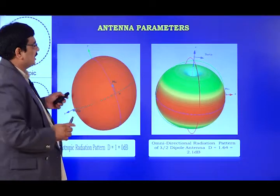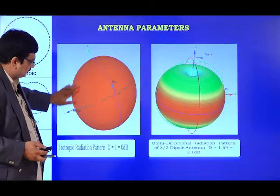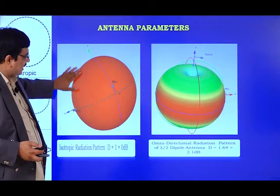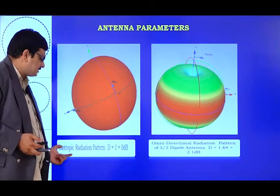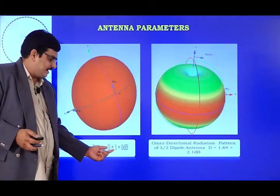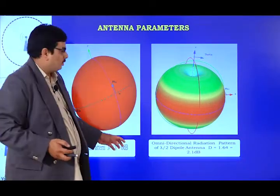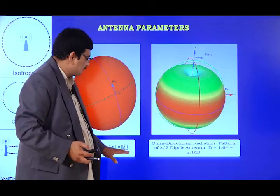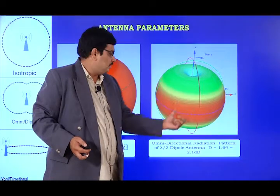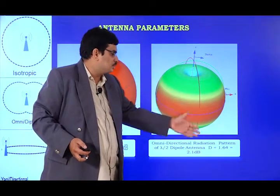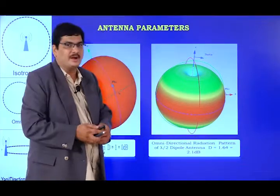The radiation pattern of an isotropic radiator is a simple sphere — the entire radiation is shown uniformly. For an isotropic antenna, the directivity is 1, and 10 log(1) equals 0 dB, so the gain and directivity are 0 dBi. For a half-wave dipole antenna, the directivity is 1.64, which equals 2.43 dB.